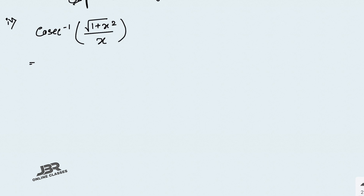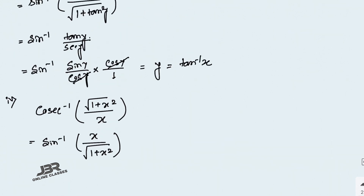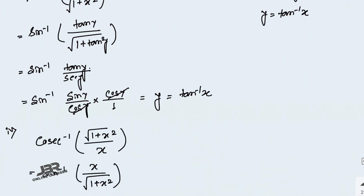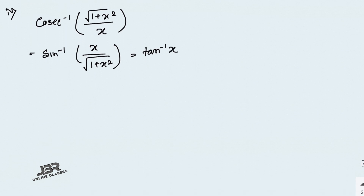Sum number 4: cosec inverse of root(1 plus x²) over x equals sin inverse of x over root(1 plus x²). Since we showed sin inverse of x over root(1 plus x²) equals tan inverse x, the answer is tan inverse x.